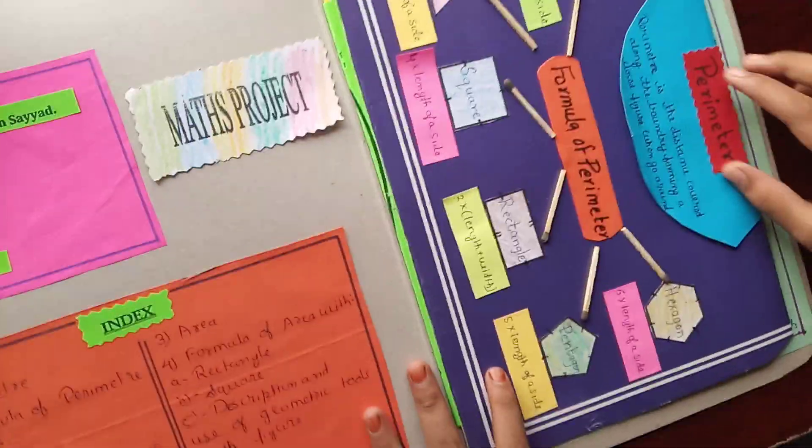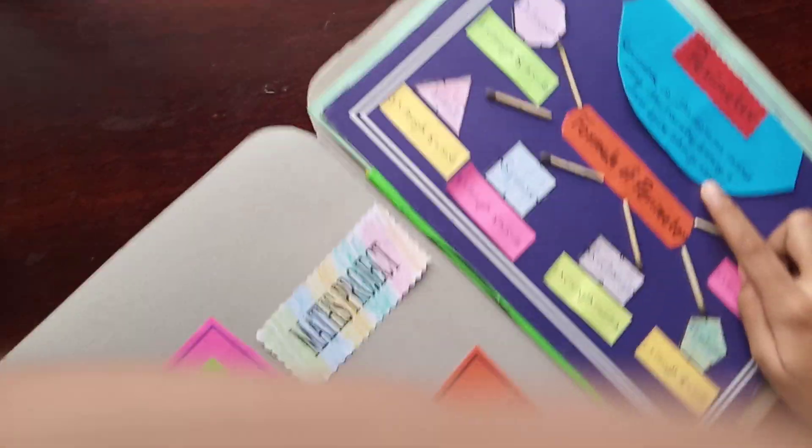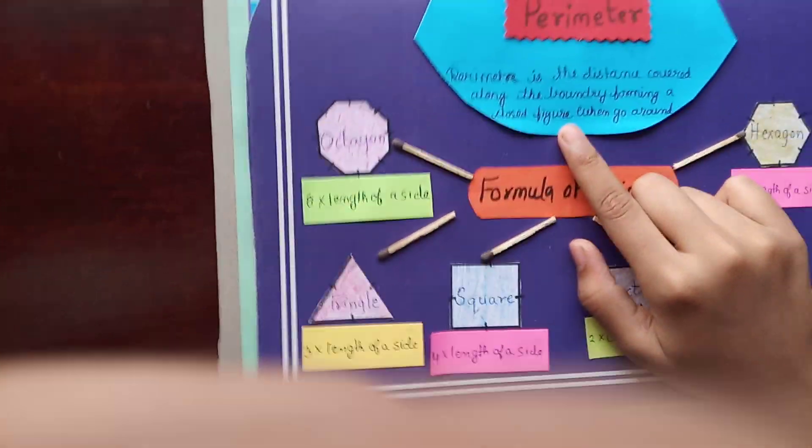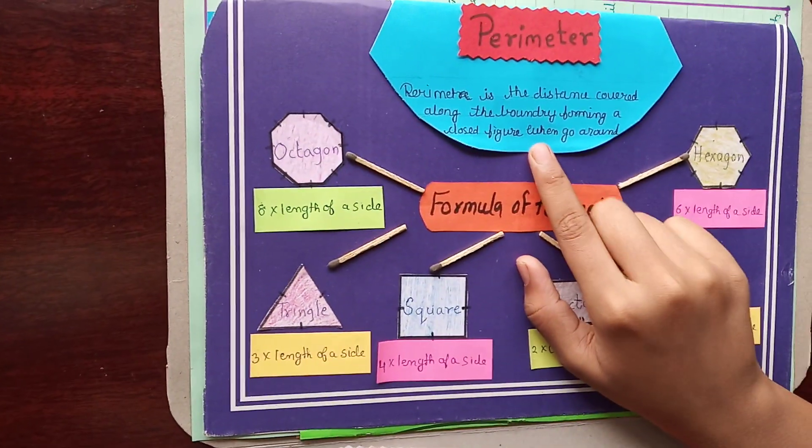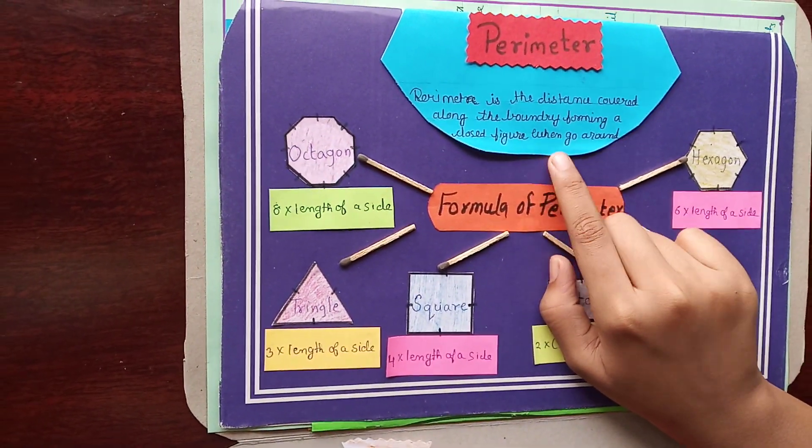And here is the perimeter, here is the definition of perimeter. Perimeter is the distance covered along the boundary forming a closed figure when you go around.